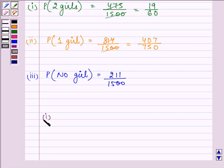So the final answer is: for the first part, 19 upon 60; for the second part, it is 407 upon 750; and for the third part, it is 211 upon 1500.